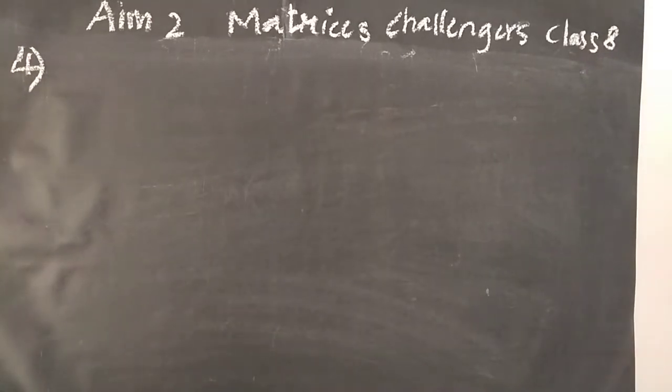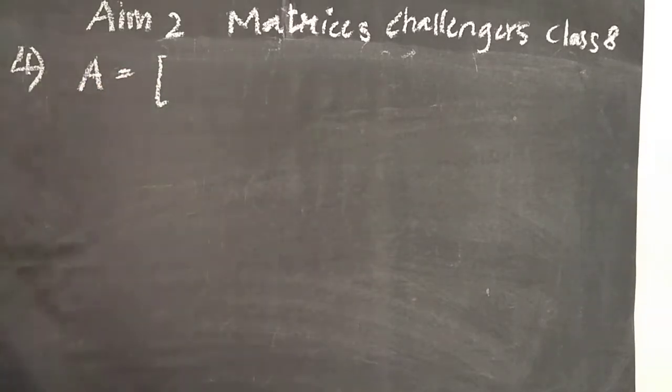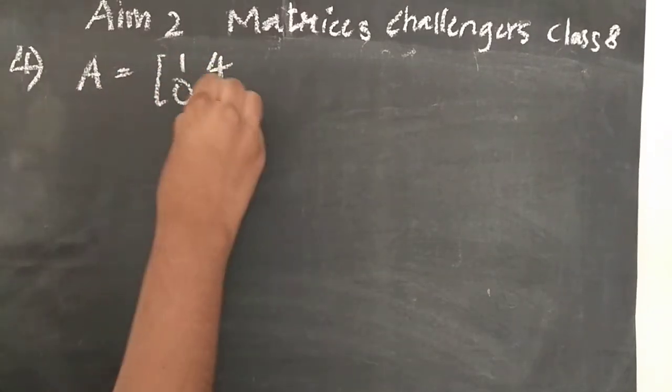Hi everyone, welcome to Vishwa Vlaam. So in this video we will be looking at Aim 2 matrices challenges class 8, 4th one. So in the 4th one they have given A matrix, 1 matrix that is 1, 4, 0, minus 1.